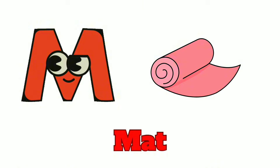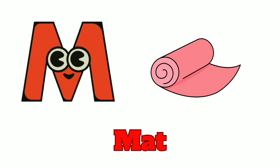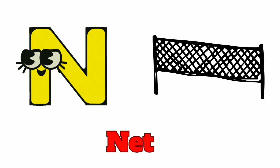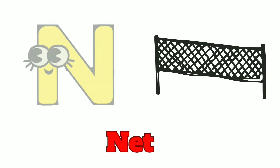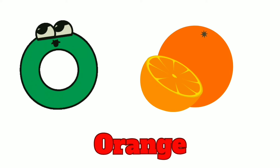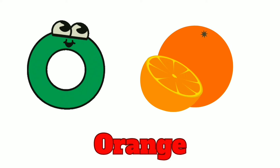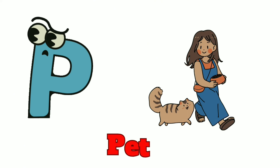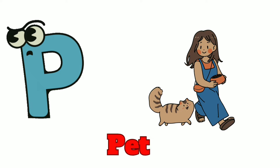M is for Mat, M-M-Mat. N is for Net, N-N-Net. O is for Orange, O-O-Orange. P is for Pet, P-P-Pet.